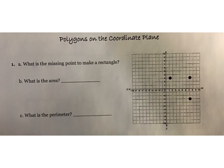Hey guys, in this lesson we're going to use polygons on a coordinate plane. Polygons are your 2D shapes, and a coordinate plane means on your grid. We're going to give you some of the points and you're going to have to find the missing ones. Other times you're going to have to graph the whole thing, and then we're going to have to find the area and the perimeter.